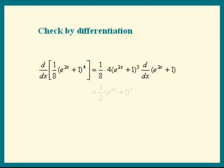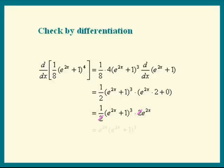4 goes into the 8. We have 1 half times e to the 2x plus 1 cubed. Differentiate e to the 2x. We get e to the 2x times the derivative of 2x. That's a 2. Plus differentiate the 1. We get a 0. The last factor becomes 2 times e to the 2x. The 2's cancel. And there's the integrand.